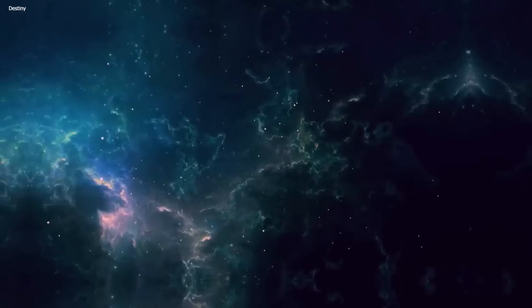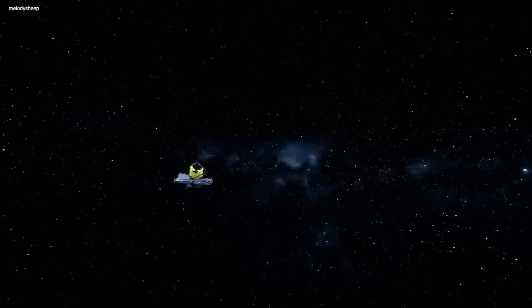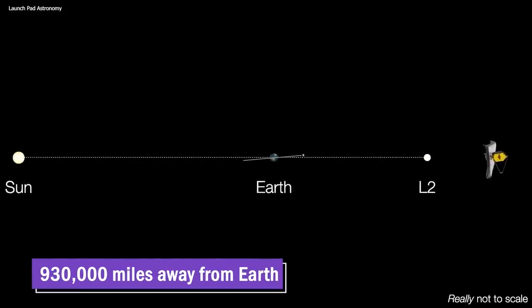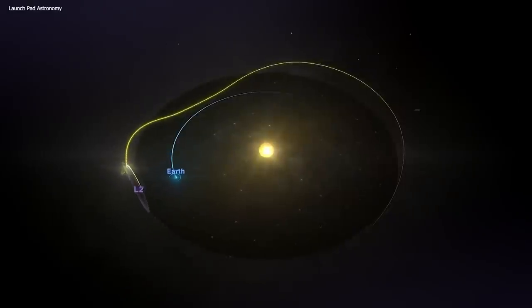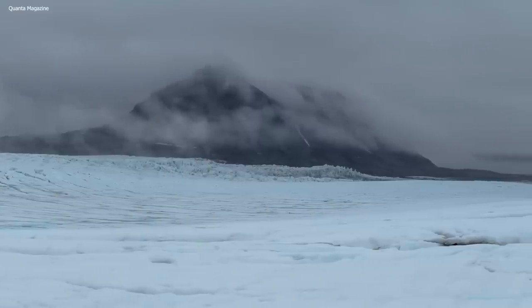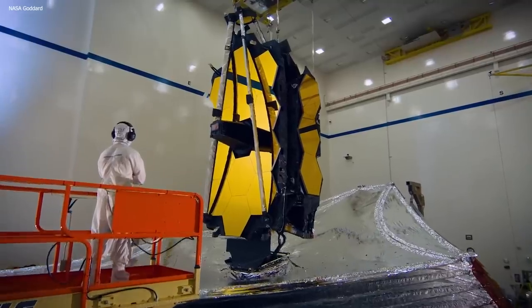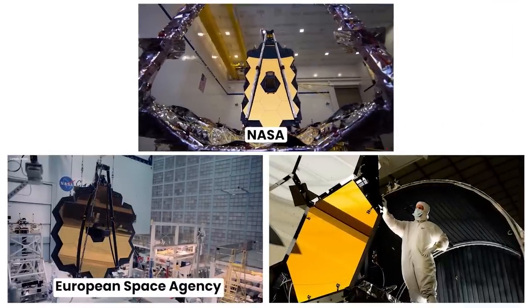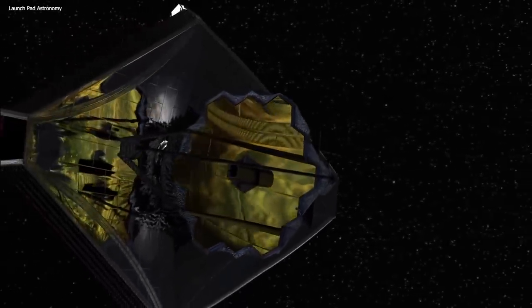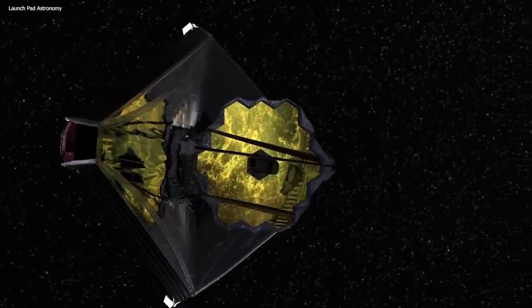And here's something that'll blow your mind. The JWST is so far out in space, orbiting around the sun, that it's about 930,000 miles away from Earth. And at that distance, things get chilly. We are talking minus 223 degrees Celsius kind of chilly. Now, this impressive mission isn't a solo act. It's the result of an epic collaboration between NASA, the European Space Agency, and the Canadian Space Agency. So next time you look up at the night sky, remember the JWST is out there, unveiling the mysteries of our cosmos. Isn't that something?